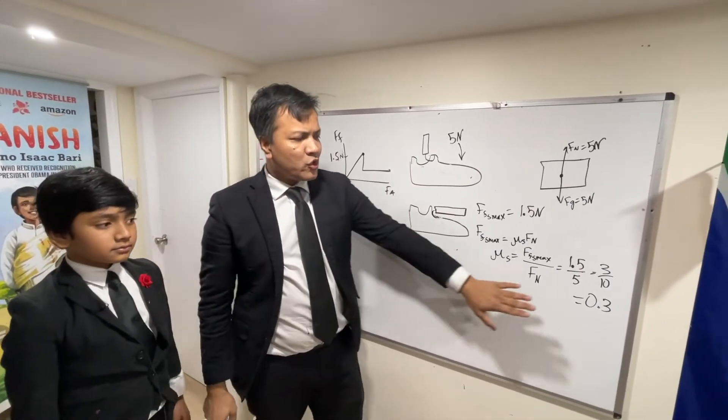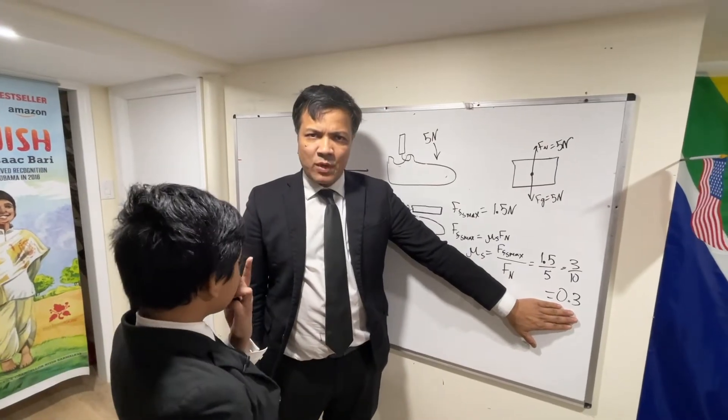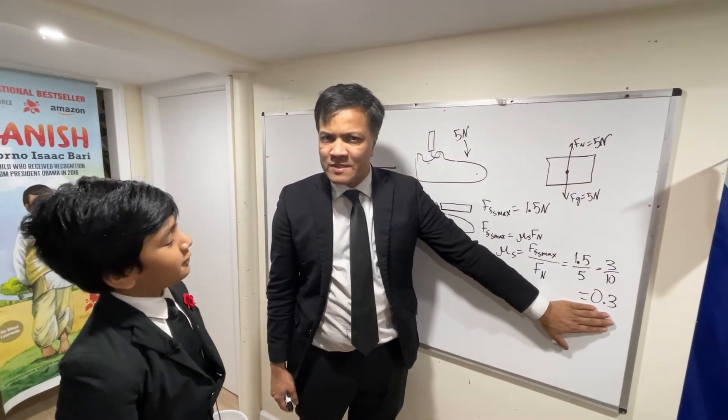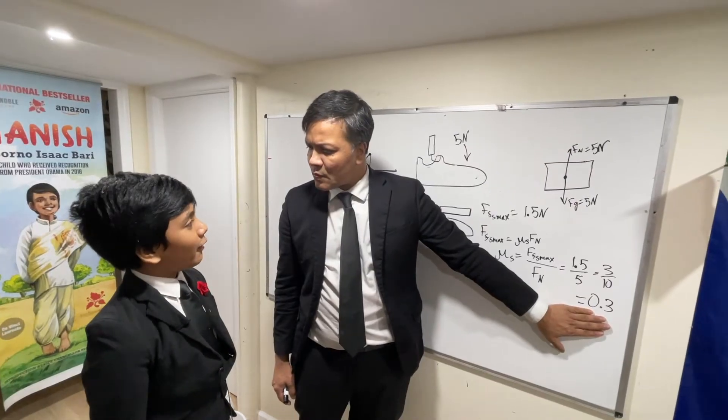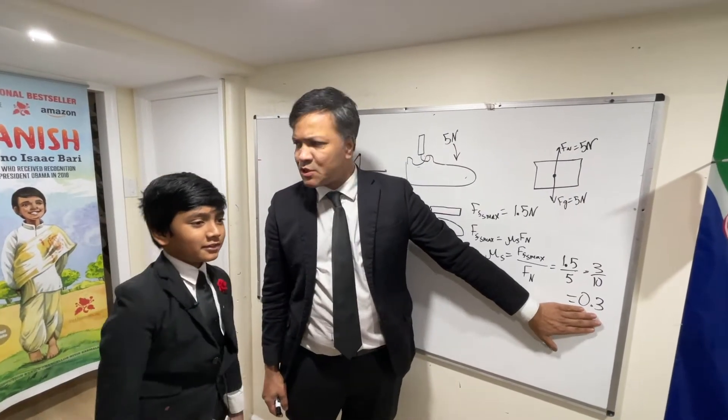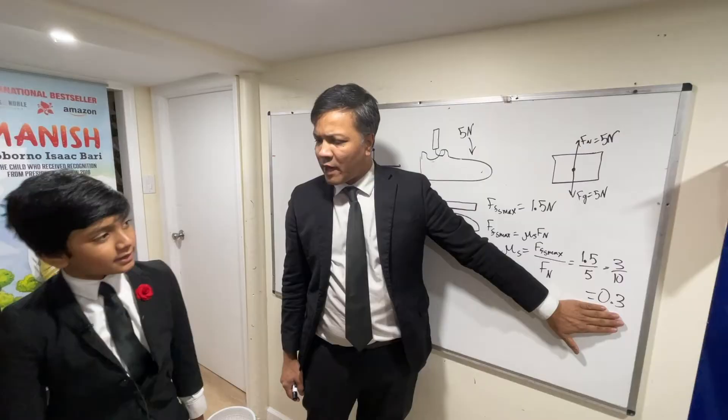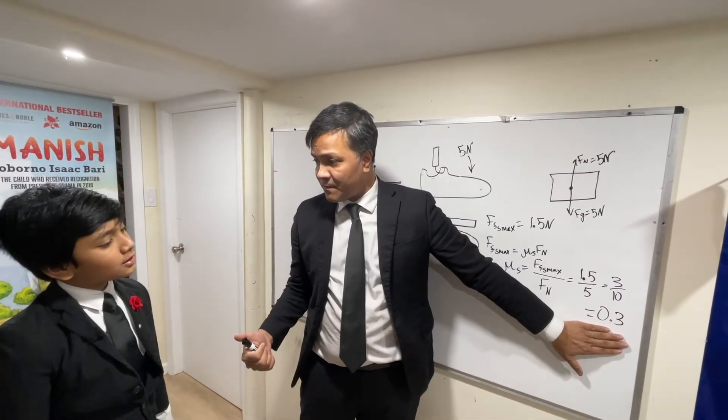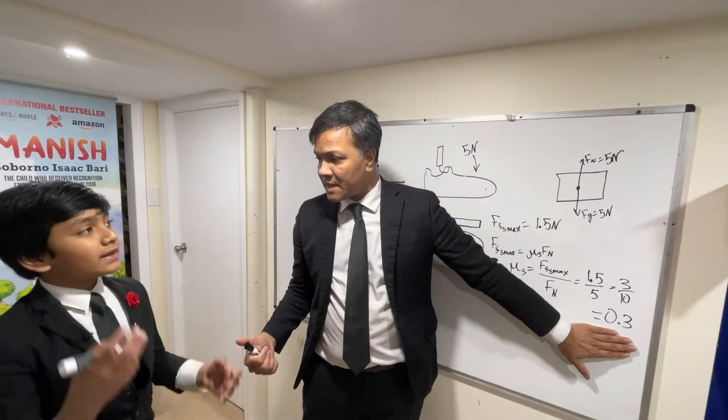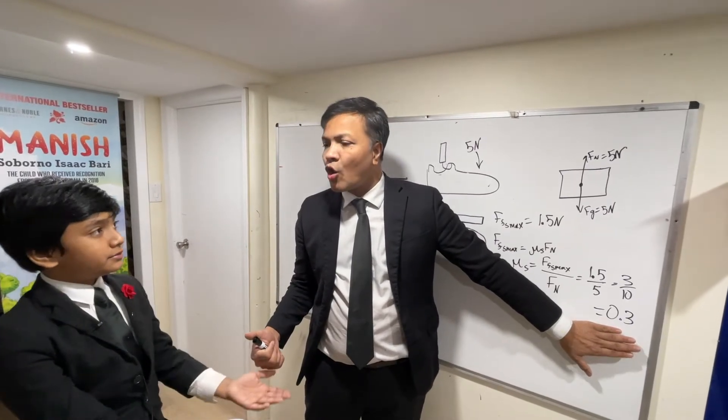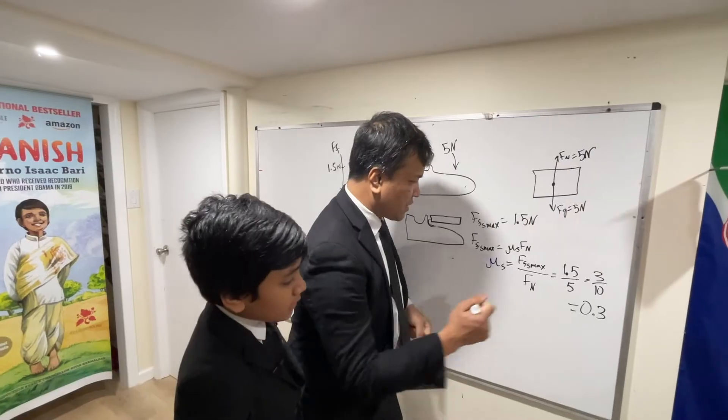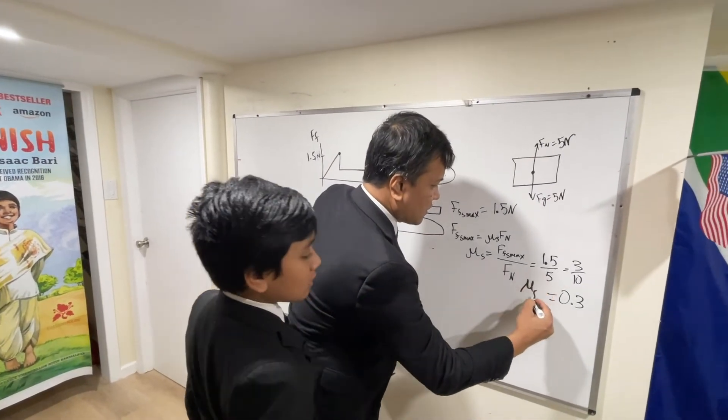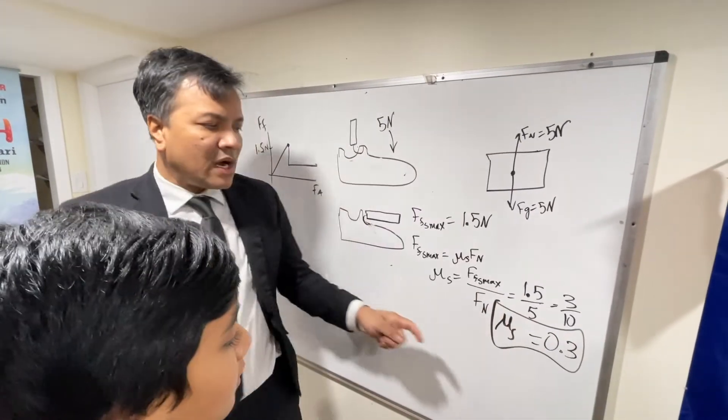Alright, and now we have to kind of understand whether it is right or wrong. One thing we know is that this is less than one, and friction has to be less than one. Friction always has to be between zero to one. Okay, so is this between zero to one? I believe so. Alright. Is this the maximum static friction? No, that is the coefficient of static friction. Coefficient of static friction. Okay, so we're gonna write mu s.